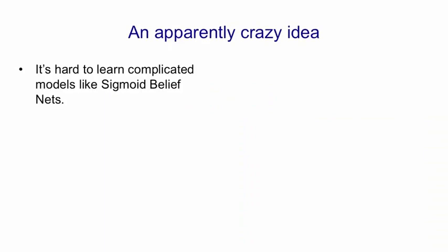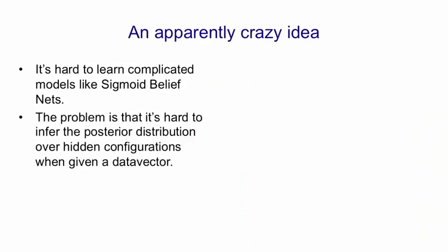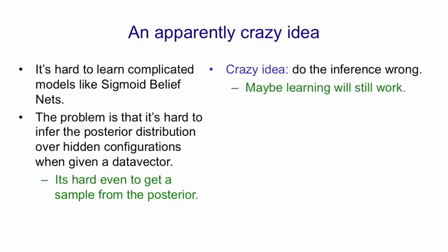To summarize, it's hard to learn complicated models like sigmoid belief nets because it's hard to get samples from the true posterior distribution over hidden configurations when given a data vector. And it's hard even to get a sample from that posterior. That is, it's hard to get an unbiased sample. So the crazy idea is that we're going to use samples from some other distribution and hope that the learning will still work. And as we'll see, that turns out to be true for sigmoid belief nets.